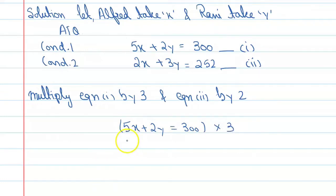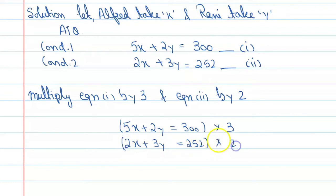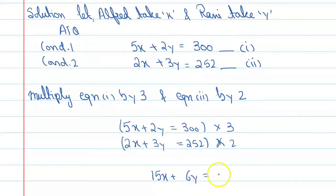The second equation is 2x + 3y = 252, and multiply this equation by 2. The result you will get: equation 1 multiplied by 3 gives 15x + 6y = 900. Equation 2 multiplied by 2 gives 4x + 6y = 504.